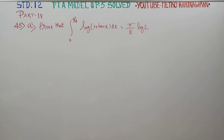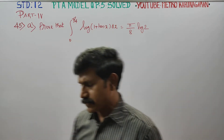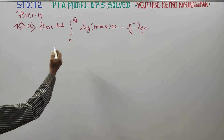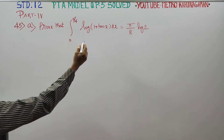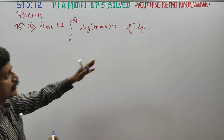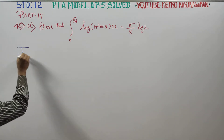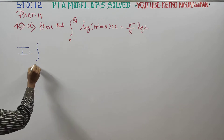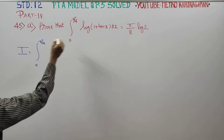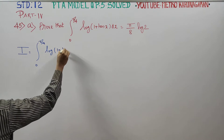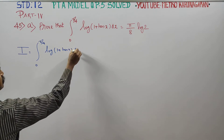Dear 12th standard students, I am Etru Karanagaran. In PTA model question paper 5, question number 45a, a 5-mark question, you have to prove that the integration from 0 to π/4 of log(1 + tan x) dx is equal to π/8 · log 2. First of all, I start the problem by naming it I, that is I = ∫₀^(π/4) log(1 + tan x) dx.